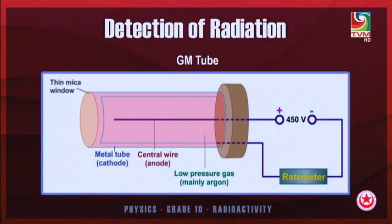Greater the ionization, greater will be the reading at the rate meter. If alpha particles enter the GM tube, there will be greater ionization giving a higher rate reading. When beta passes through, there will be moderate ionization giving a moderate reading. When gamma passes through, there will be very weak ionization and a very low reading.